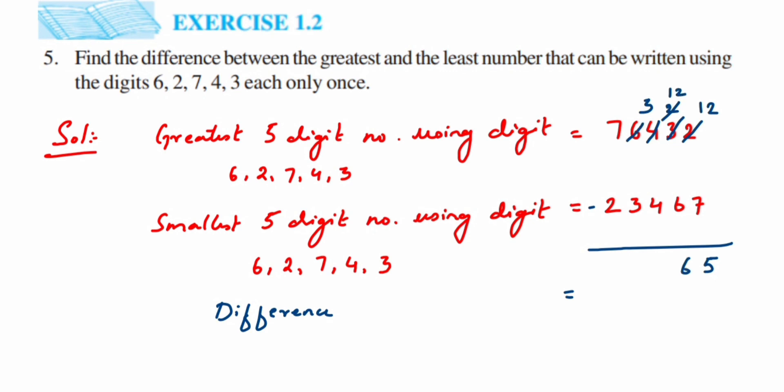Then 5 minus 3 is 2, and 7 minus 2 is 5. So the answer is 52965. This is the difference.